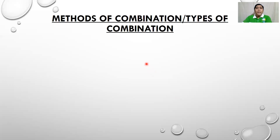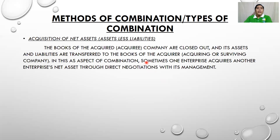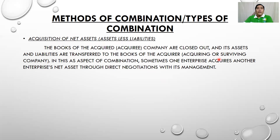What are the methods or types of combination in terms of business combination? Number one is the acquisition of net assets — assets less liabilities. If you remember from basic accounting, net assets means assets less liabilities. The books of the acquiree — the company being acquired — are closed out and its assets and liabilities are transferred to the books of the acquirer, the surviving company. In this type of combination, one enterprise acquires another enterprise's net assets through direct negotiations with its management.